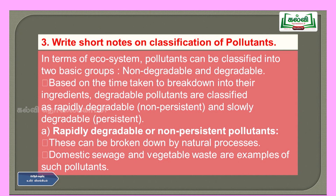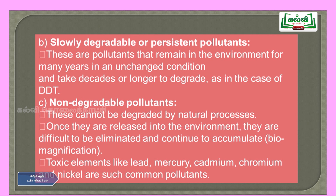Rapidly degradable or non-persistent pollutants can be broken down by natural processes; domestic sewage and vegetable waste are examples. Slowly degradable or persistent pollutants remain in the environment for many years unchanged and take decades or longer to degrade — DDT is a good example. Non-degradable pollutants cannot be degraded by natural processes; once released, they are difficult to eliminate and continue to accumulate. This accumulation is called biomagnification.